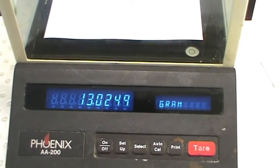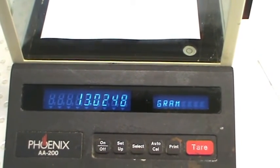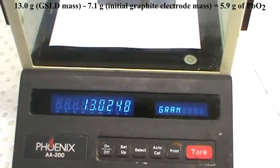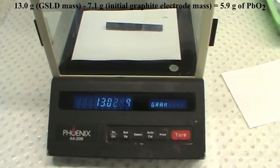To get the mass of lead dioxide, weigh the graphite substrate lead dioxide electrode on a balance, and subtract from the initial graphite electrode mass. We have 5.9 grams of lead dioxide, which is not bad for 2.8 hours.